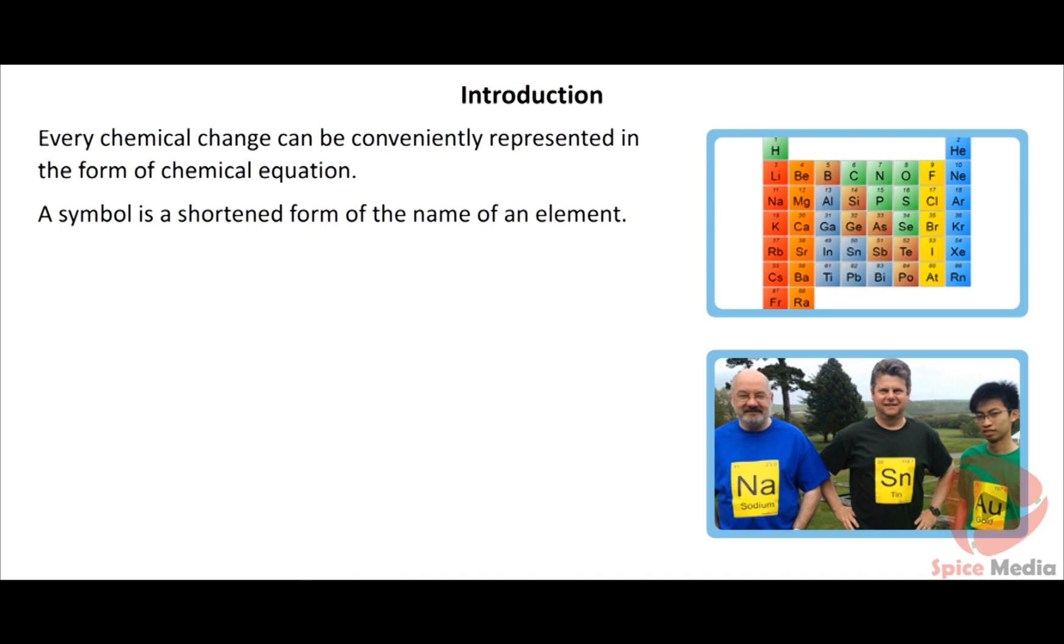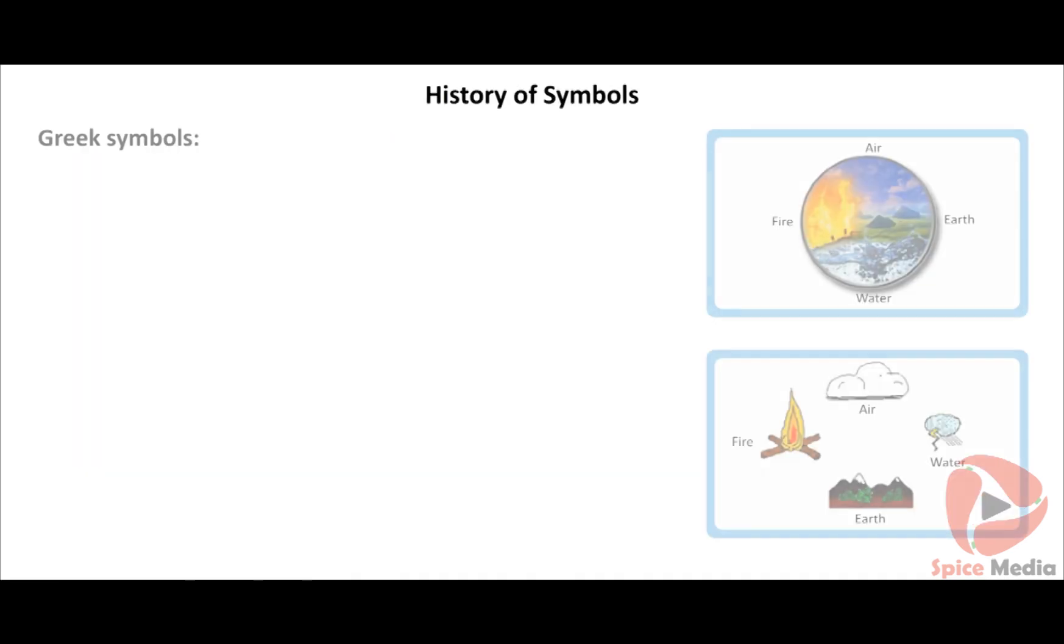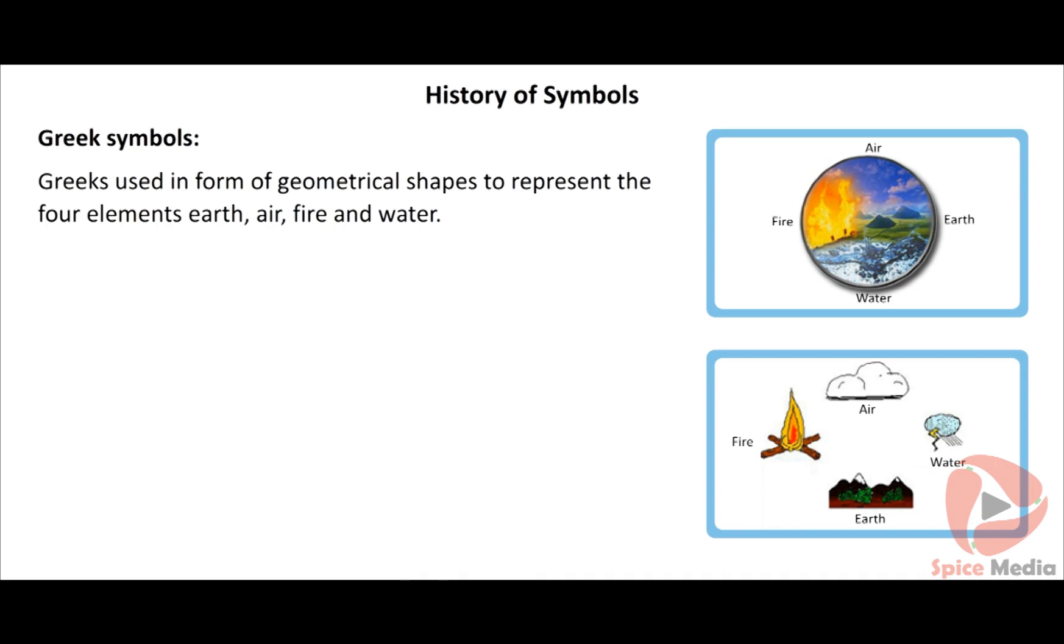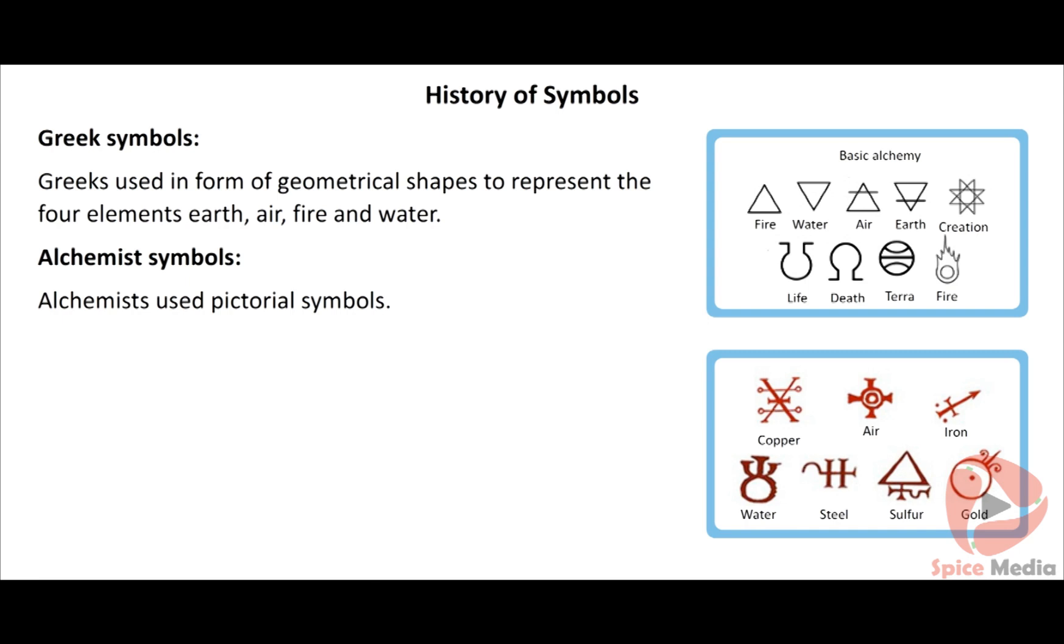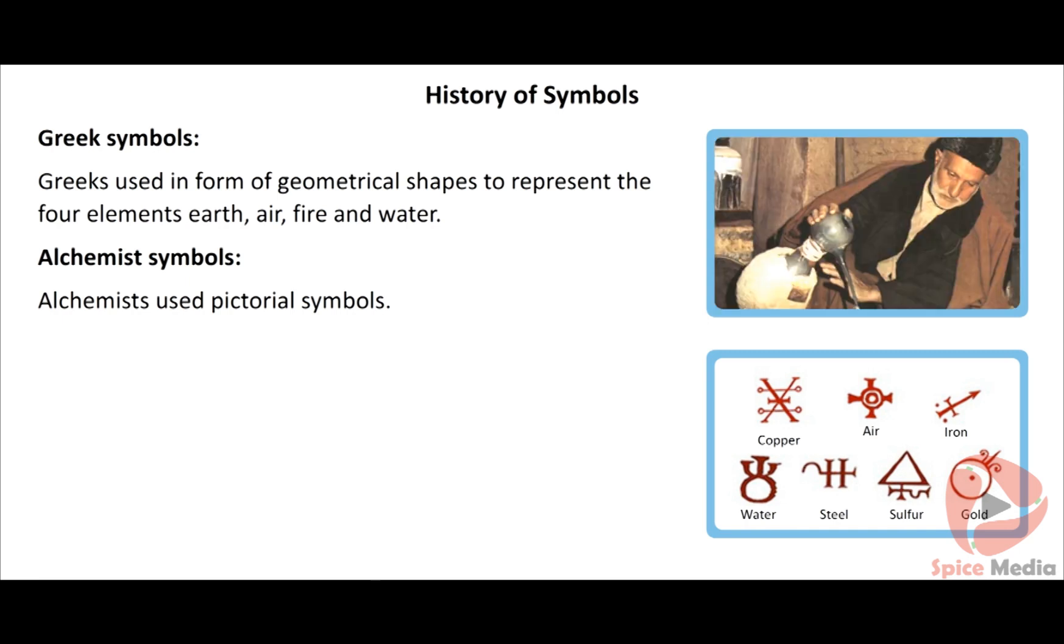Greek symbols: Some earlier symbols in the form of geometrical shapes were used by the ancient Greeks to represent the four elements: earth, air, fire and water. Alchemist symbols: In the days of alchemists, pictorial symbols were used to represent the different materials. The work of trying to change less valuable metal into gold was called alchemy and the men who did this were alchemists.